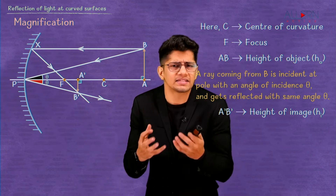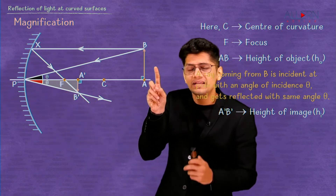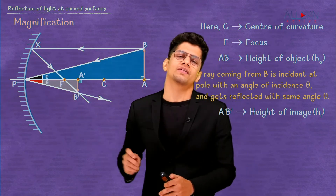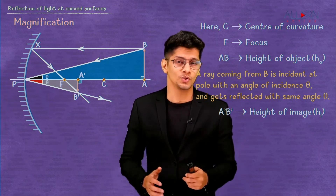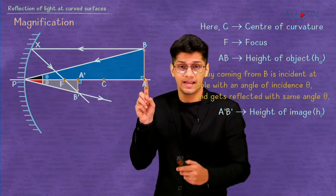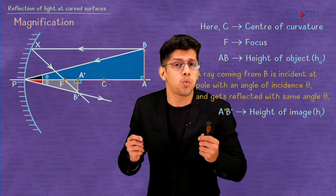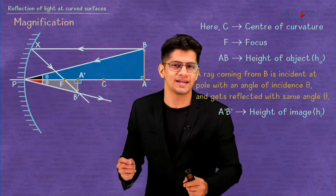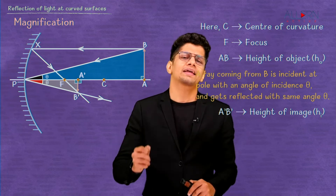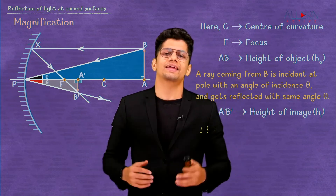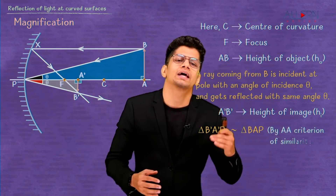A'B' forms part of triangle B'A'P, and AB forms part of triangle BAP. If we prove these two triangles similar, we can find the relation we need. Both triangles have a 90-degree angle, giving us one pair of equal angles. The angle of incidence equals the angle of reflection, giving us a second pair. Therefore, triangle B'A'P is similar to triangle BAP by the AA criterion of similarity.